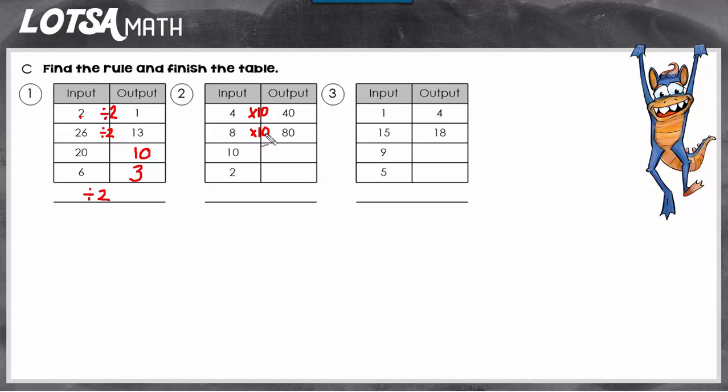Is 8 times 10 equal to 80? Yes. So we know our rule is going to be times 10. And then all we have to do is take our input, multiply it by 10, and that's going to give us our output. So 10 times 10 is 100. And 2 times 10 is 20.